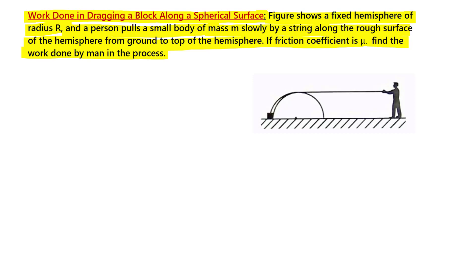Let us see what is happening in this problem. We have a hemisphere that is not smooth — it has a friction coefficient mu — and it is fixed on a surface. There is an object of mass m attached through a string which is pulled by a person. The mass m, friction coefficient mu, and radius R are all given.